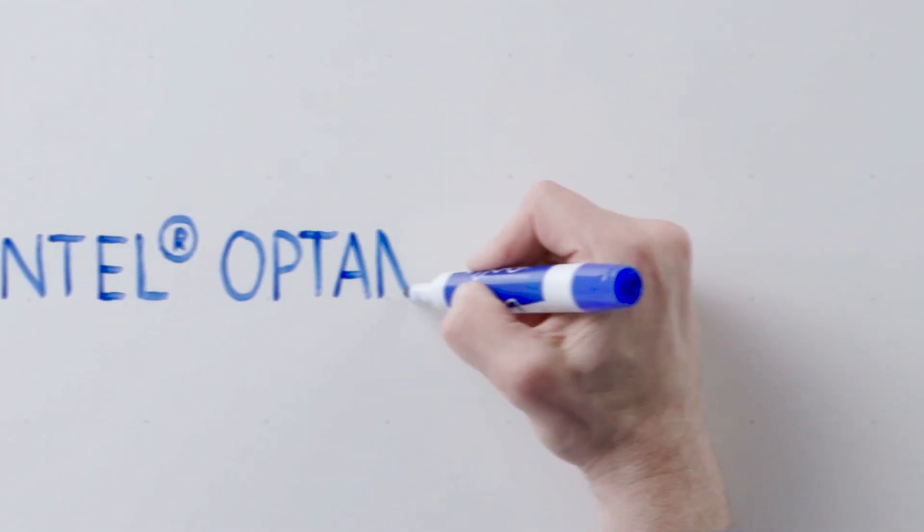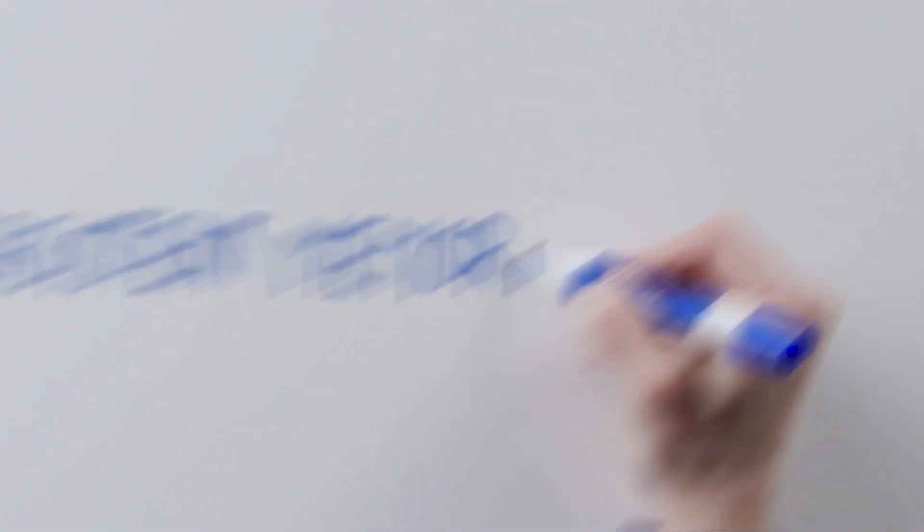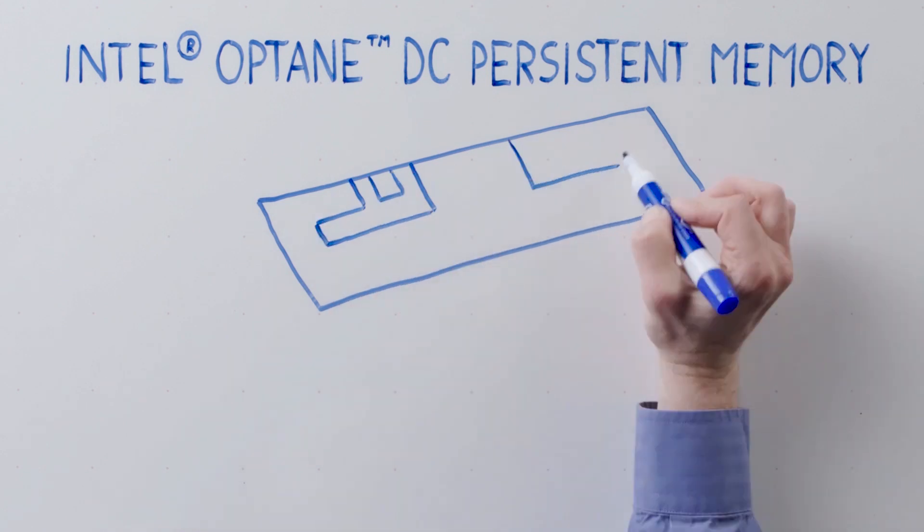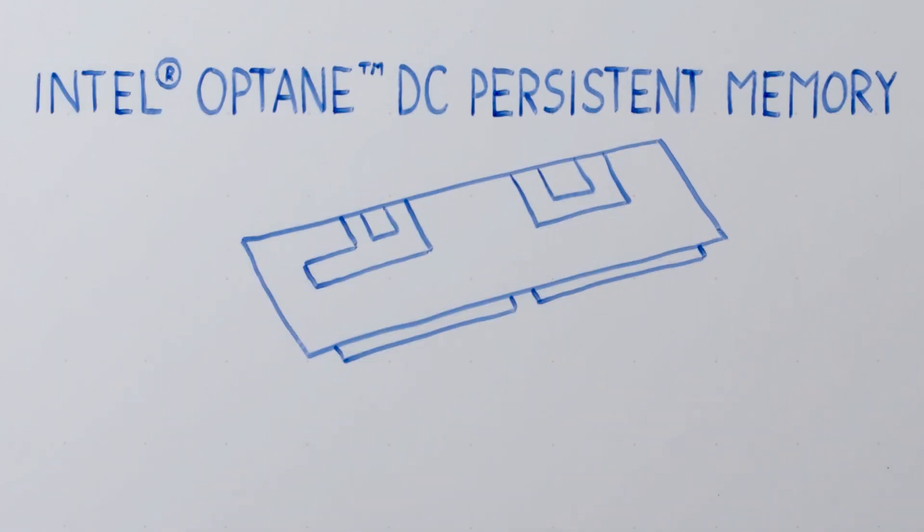For example, Intel is delivering the innovative new Intel Optane DC persistent memory, the server memory technology that delivers very high capacity DRAM-like performance to speed workloads on large datasets.